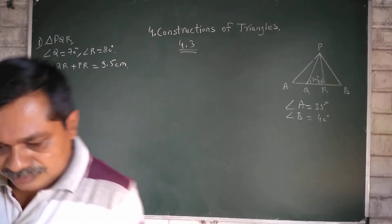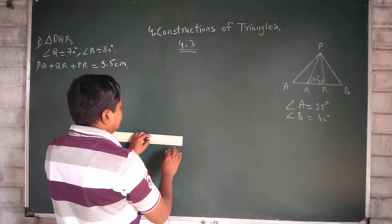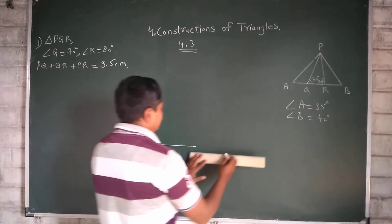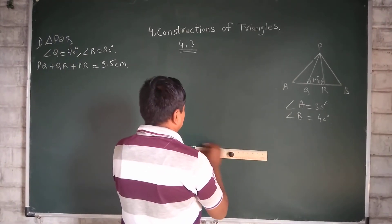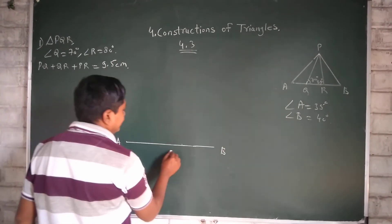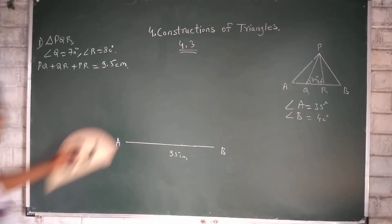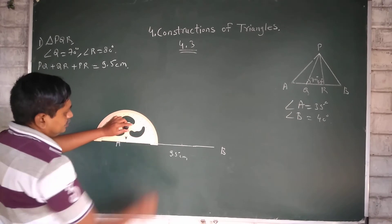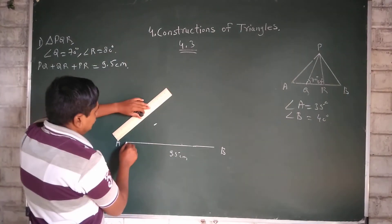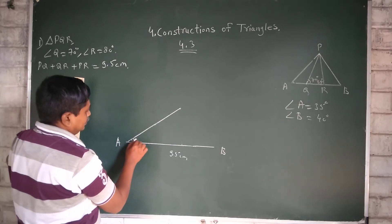Now see, 9.5 cm line, first we will draw. A, B, 9.5 cm. Angle A, now we will take 35 degree.